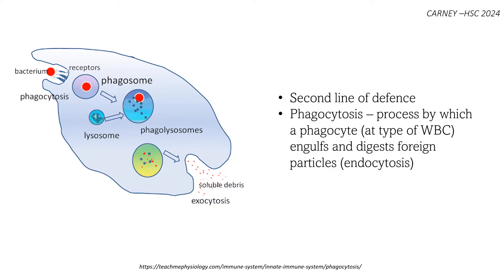The phagosome fuses with lysosomes, which are small organelles containing digestive enzymes. The enzymes help to break down the pathogen into smaller pieces, essentially digesting it. The remaining non-digestible material is expelled out of the phagocyte.